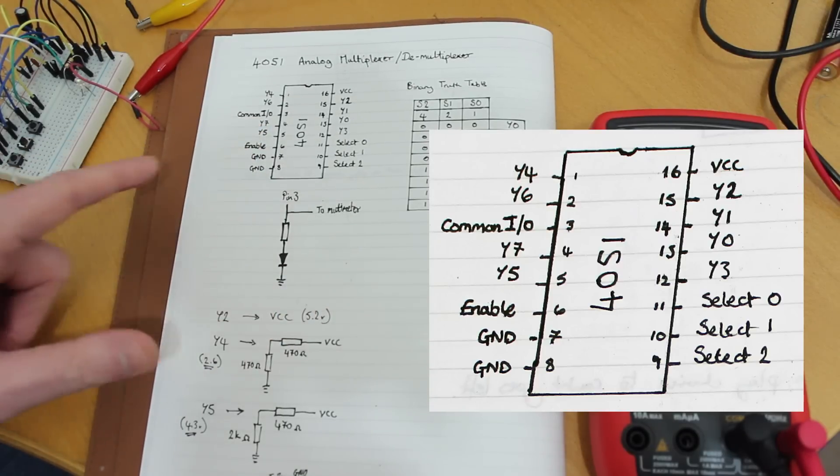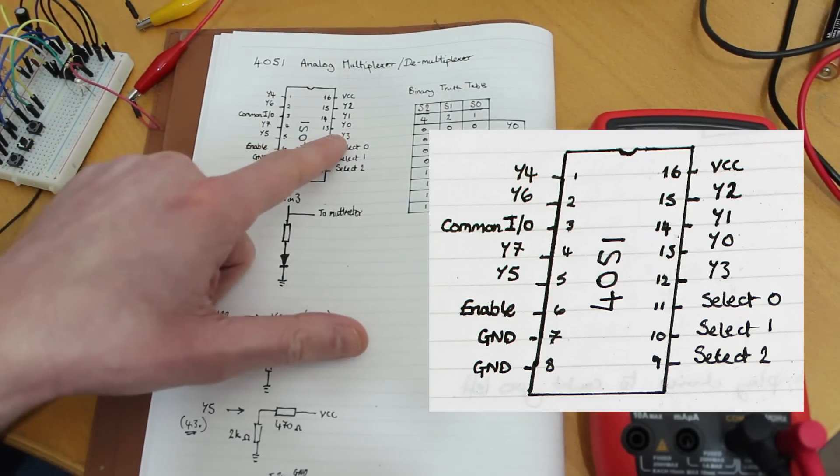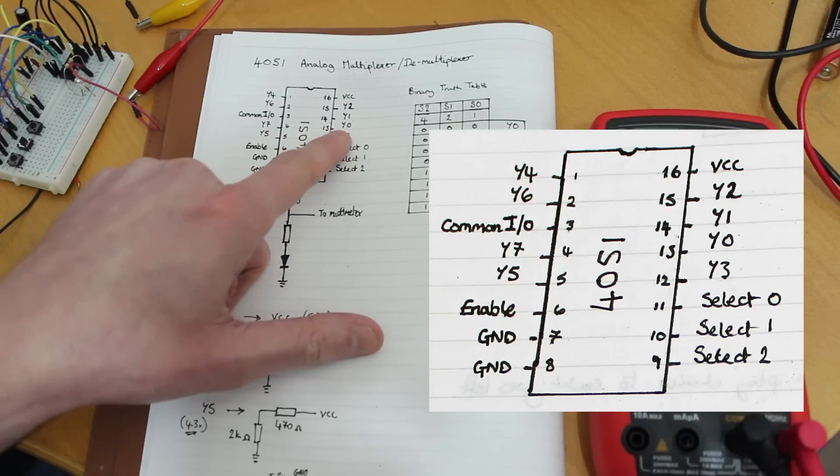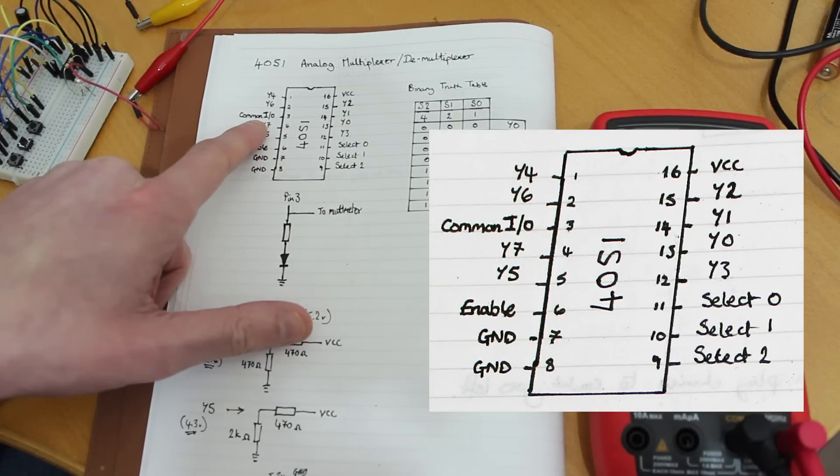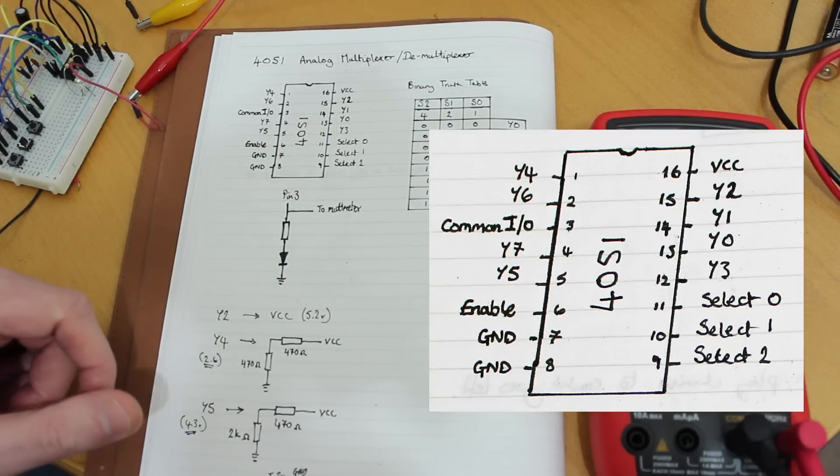So you could use that as an input, put in an analog signal, a voltage, and then that voltage can be output onto any one of these other outputs here. Or you can use that as the output and have eight separate inputs that you can switch.